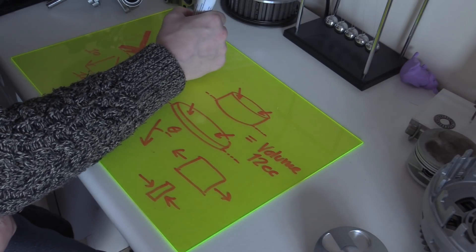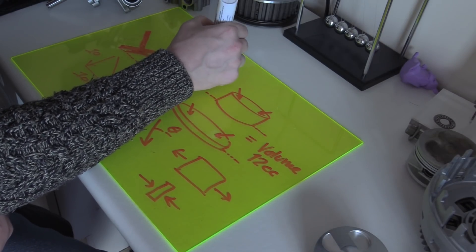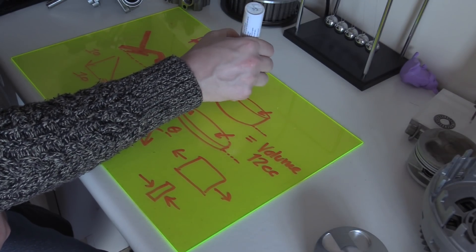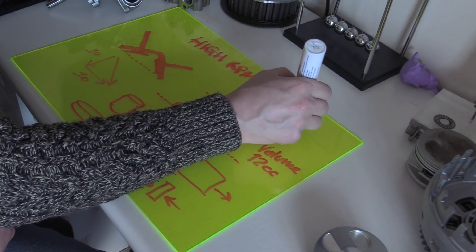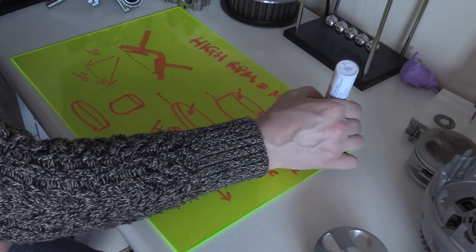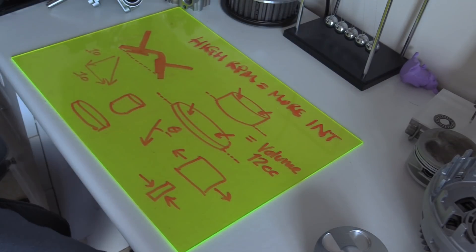The higher the RPM, generally the more interference you will see.